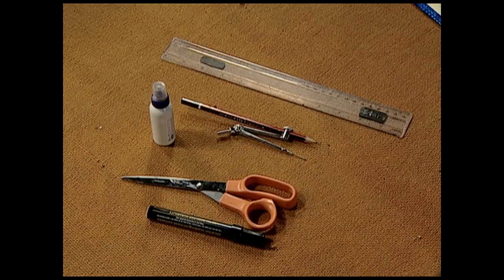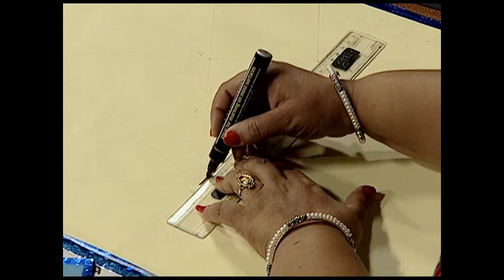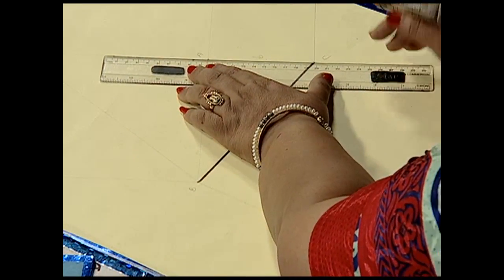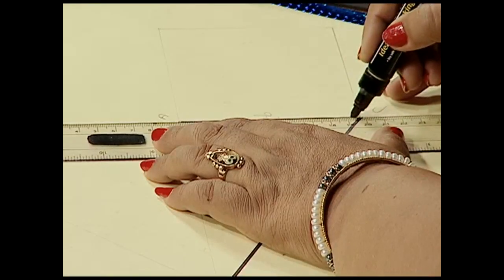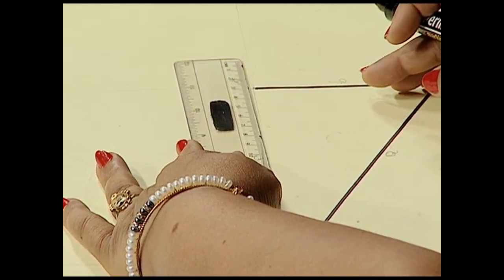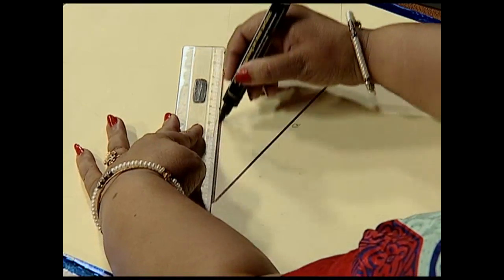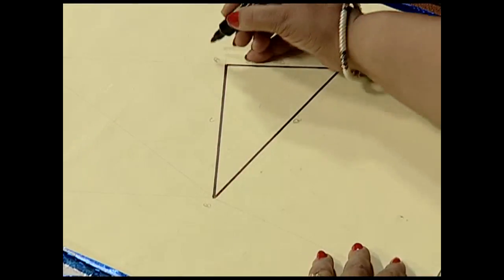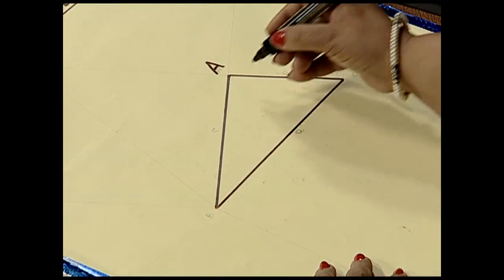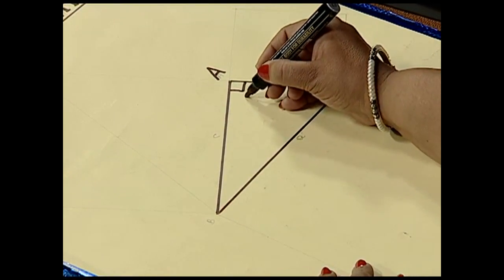Now to begin with, let us construct a right triangle. We consider a right triangle here with sides AB, BC and AC. This is angle A which is right angle. This is point B and this is C, so we have a right triangle ABC.